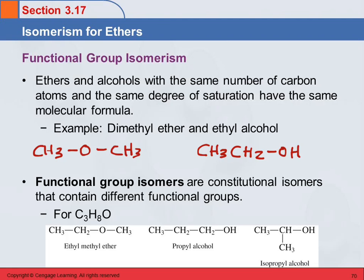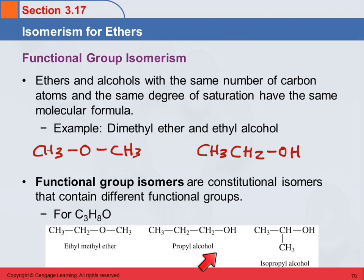All these names for the different kinds of isomers can be a little confusing, but the names are trying to be descriptive. A skeletal isomer is where the chain of carbons is different. A positional isomer has the same functional group but in a different place. A functional group isomer has different functional groups. So ethyl methyl ether and propyl alcohol are functional group isomers — this is an ether and this is an alcohol. Propyl alcohol and isopropyl alcohol are positional isomers; the position of the functional group is different, but they're still both alcohols.